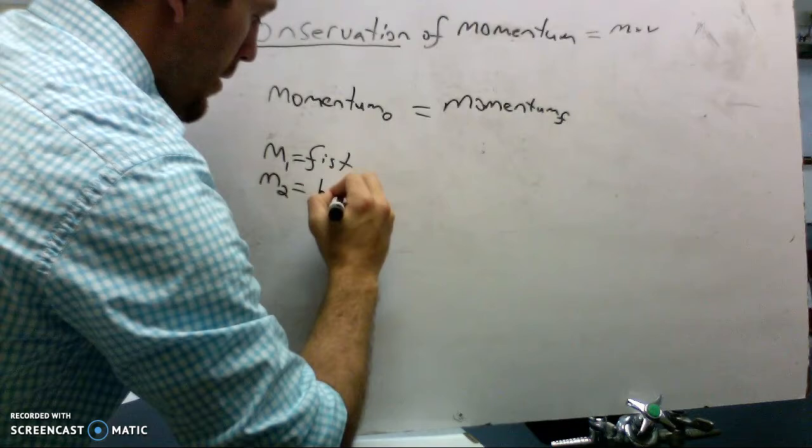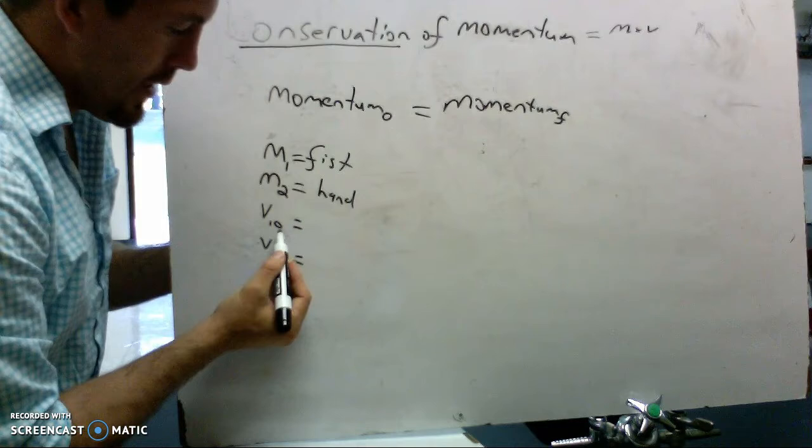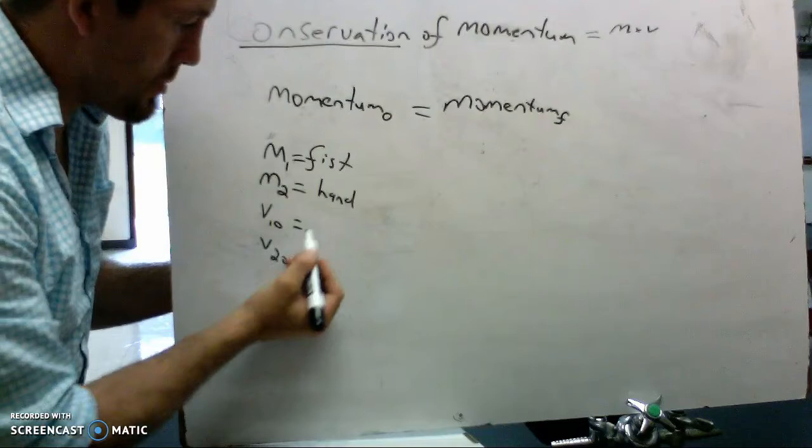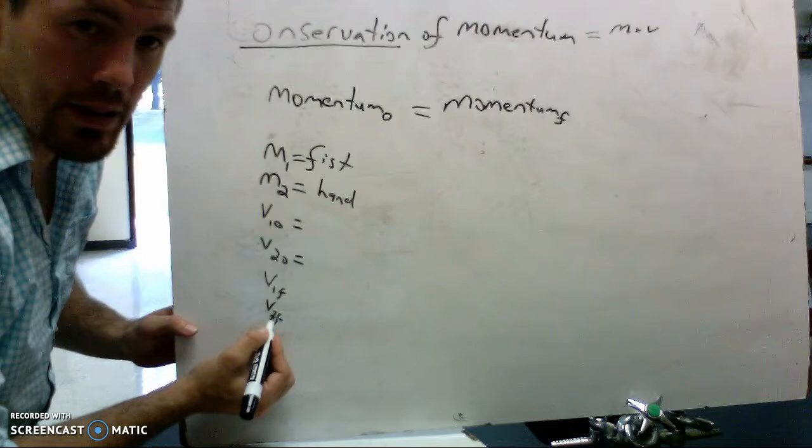And before the collision, each one of those things has a velocity. This represents the velocity of my first object, which happens to be my fist, initially. And this is the velocity of my second object, which happens to be my hand initially. That's what the zero means. And then I also have V1F or V2F. Both those things mean the final velocities of my objects. So the final velocity of my fist and the final velocity of my hand.